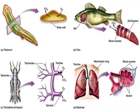Different organisms have different organs for breathing. Human beings and animals such as cow, dog, and lizard breathe through nose and lungs. Birds breathe through air sacs and lungs. Fish breathe through gills. Earthworms breathe through their moist skin. In plants, exchange of gases takes place through tiny pores present in their leaves. Whereas insects breathe through tiny openings called spiracles present on their bodies.